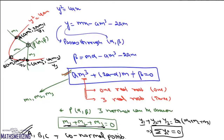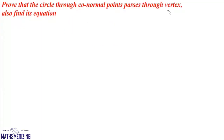We draw a normal at A, B and C — all three normals intersect at point P. So these three points A, B and C are co-normal points. Now here we need to prove that the circle through co-normal points passes through the vertex of the parabola, and we'll also need to find its equation.